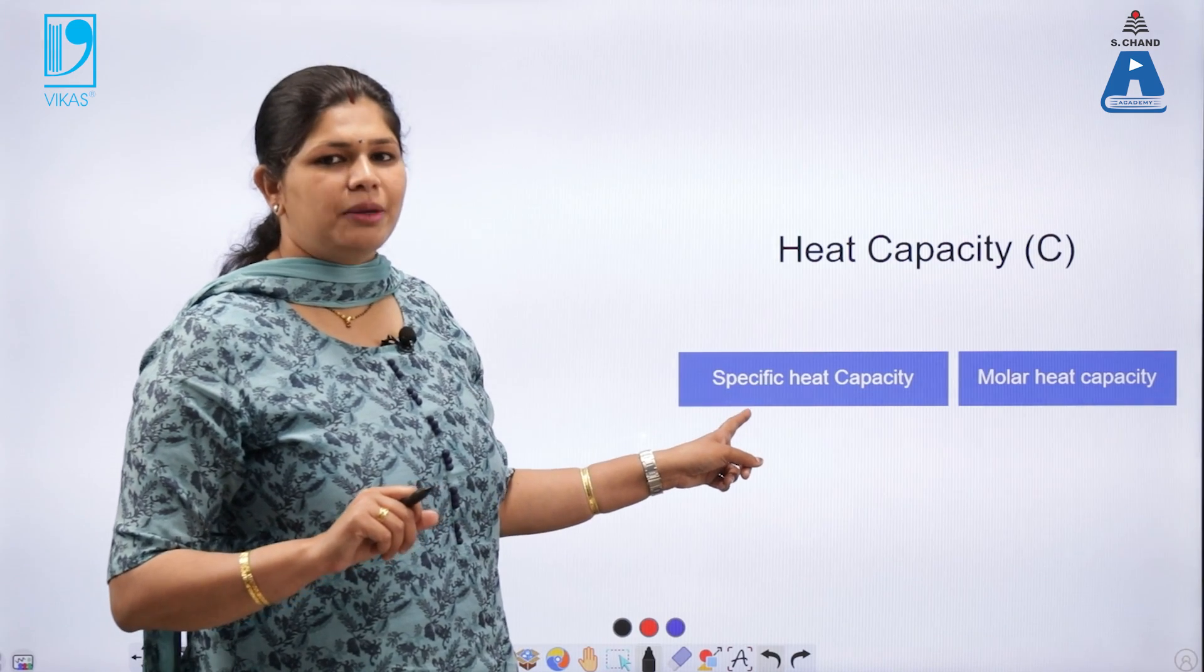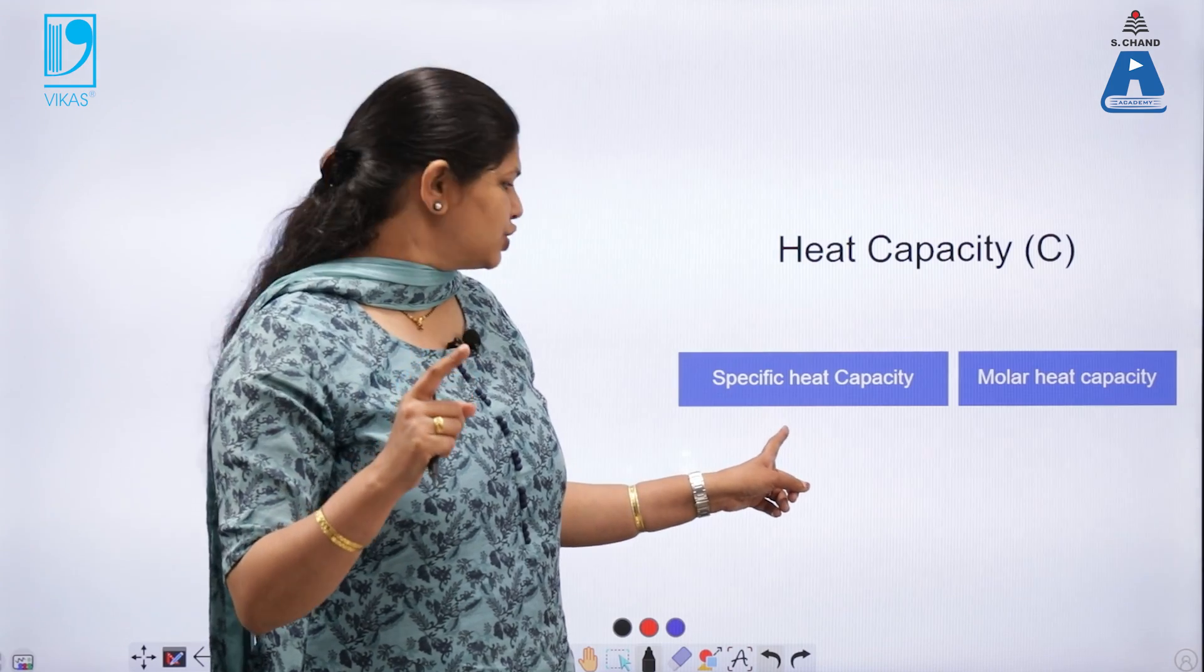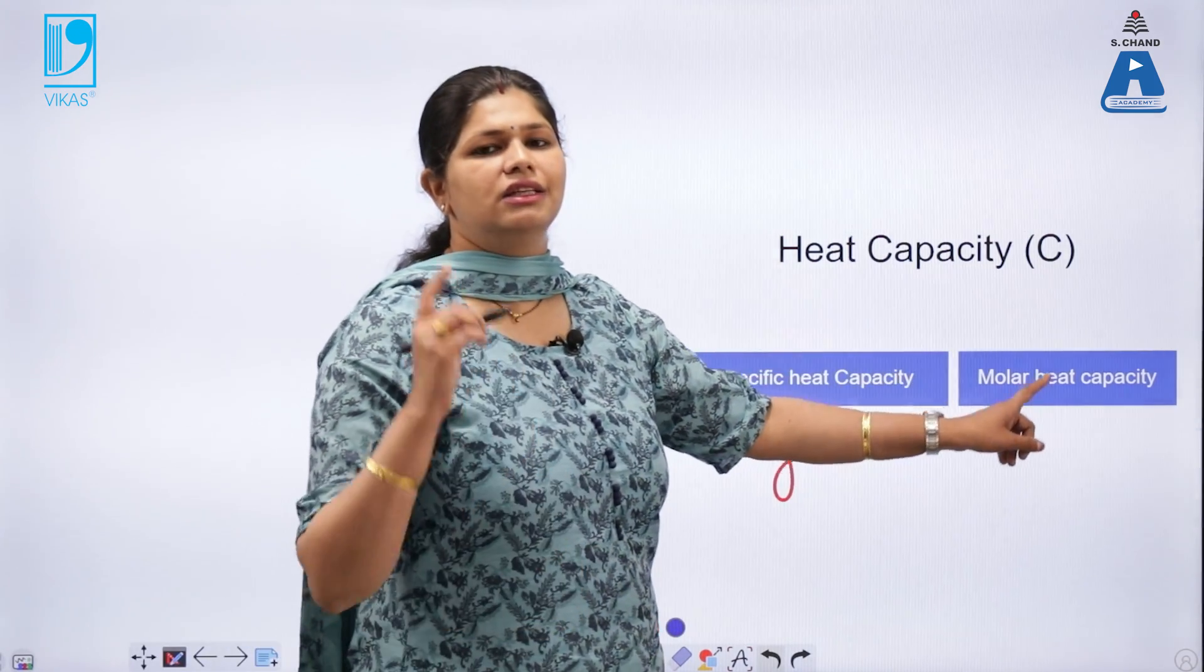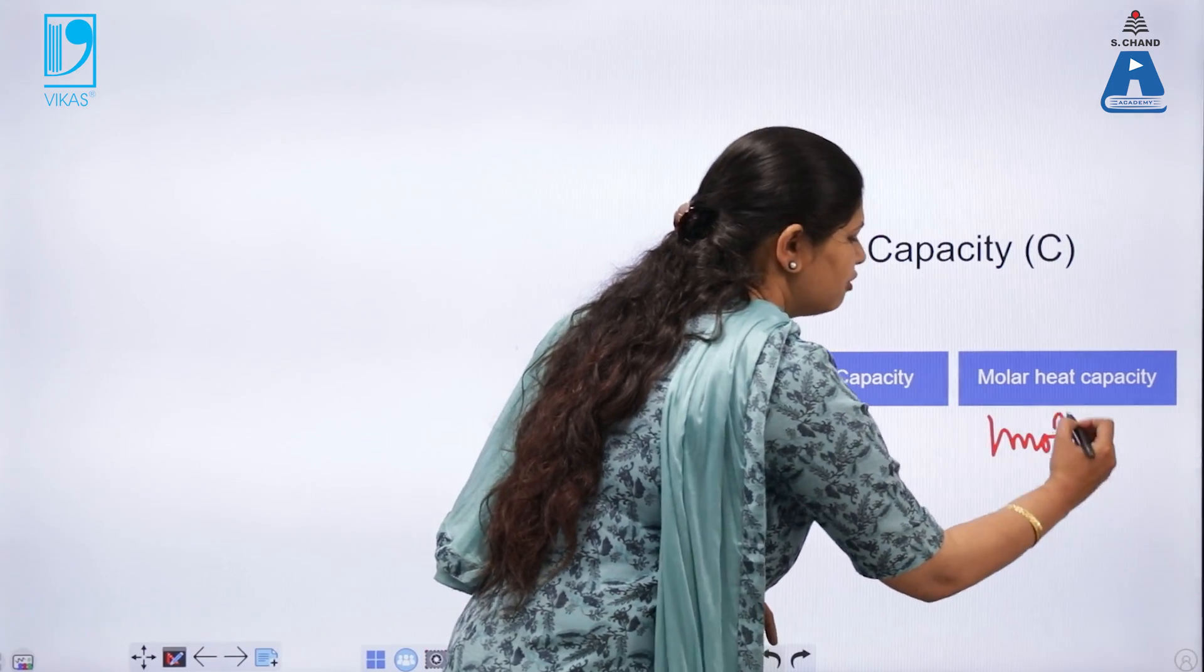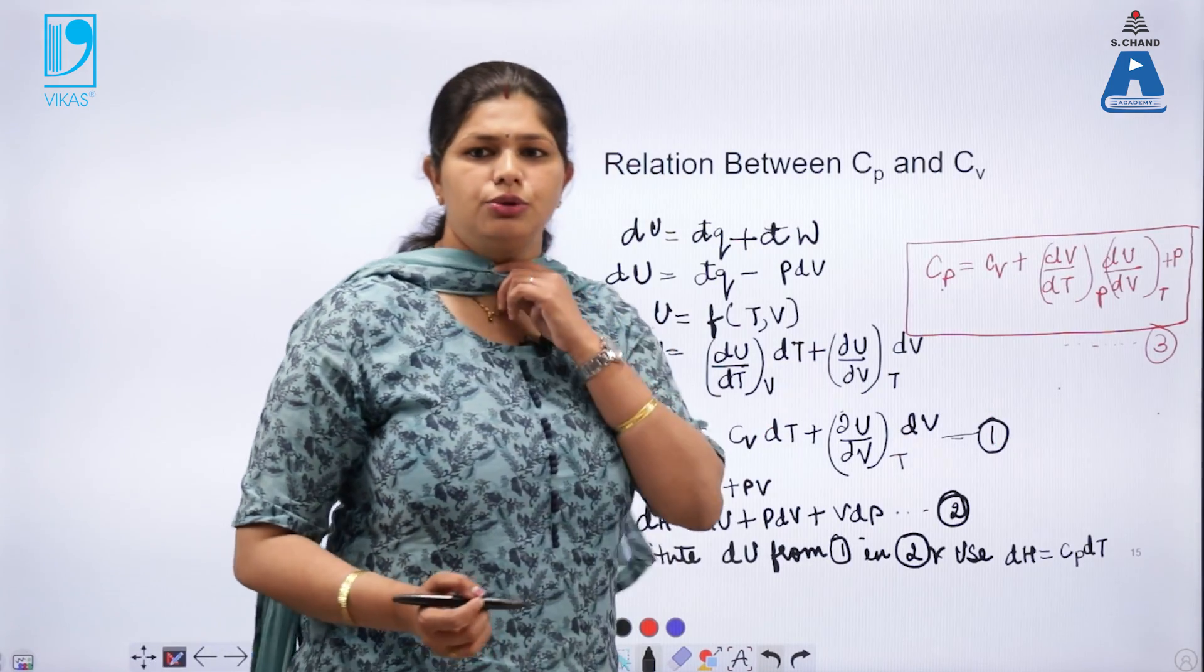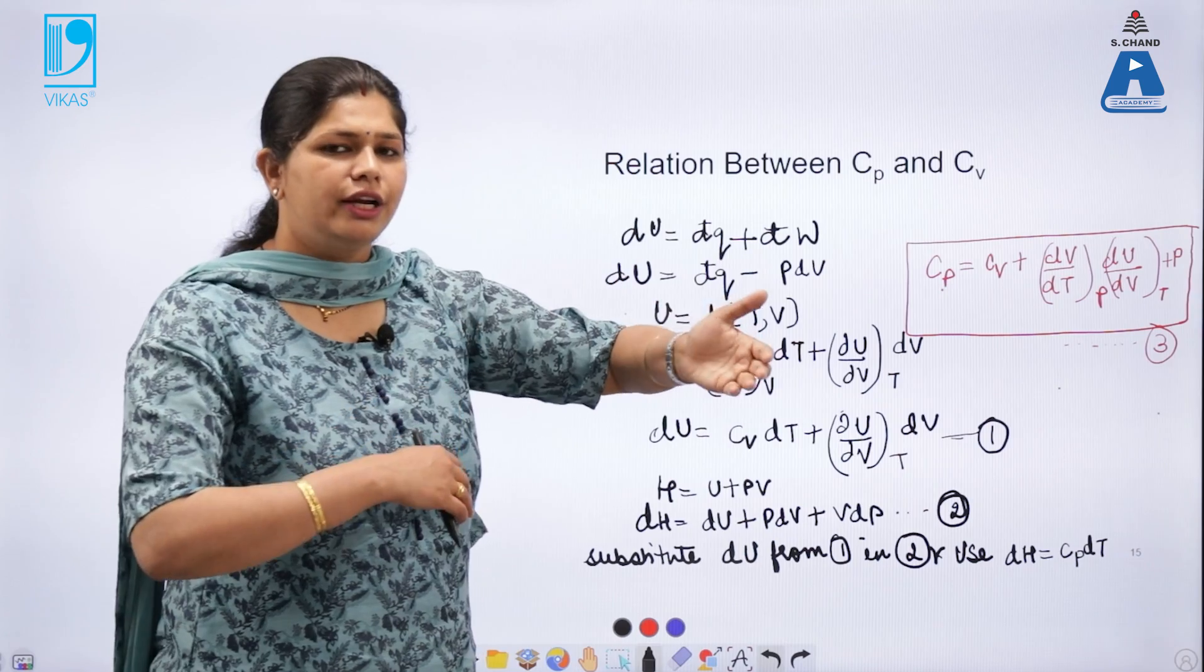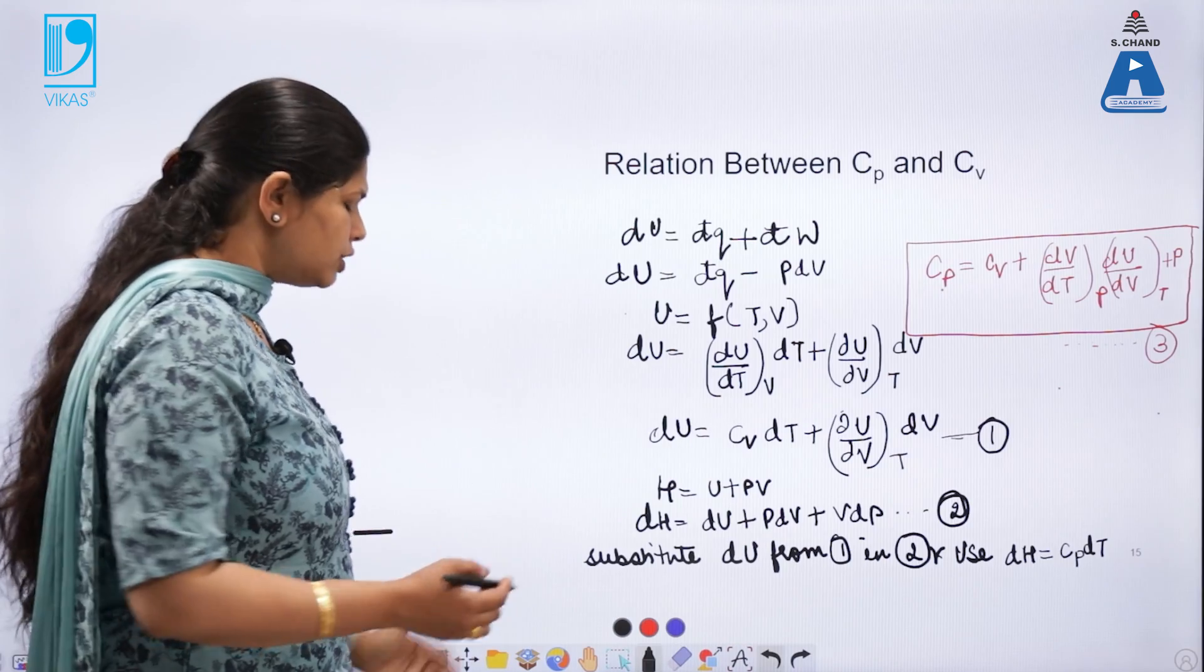So, specific heat capacity is the heat required by a substance to raise its temperature by 1 degree Celsius, 1 gram of a substance. And molar heat capacity is the amount of heat required to raise the temperature of 1 mole of the substance by 1 degree Celsius. So, why it is important to study heat capacities? Because heat capacity at constant volume and heat capacity at constant pressure is also related to internal energy and enthalpy. There is a derivation.